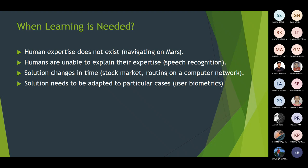If we consider navigating on Mars, human expertise does not exist or does not work in that situation. In such cases, a machine learning algorithm will be developed as part of artificial intelligence, and we can apply that machine learning application for navigating on Mars.